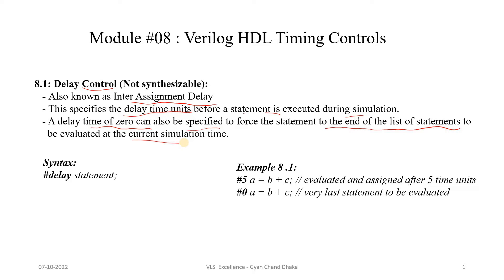For example, in a block we have five statements and one statement has zero time delay specified. That statement is going to be executed last — at the fifth place — even though it is sitting at second place. Now let's look at the syntax of inter-assignment delay. The delay time unit is specified using a hash character followed by the statement.